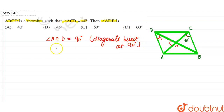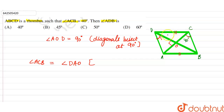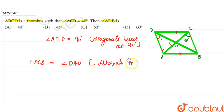Now, angle ACB is equal to angle DAO. The reason is that AB is parallel to CD, and AC is a transversal. Therefore, angle ACB equals angle DAO by the alternate interior angles property — alternate interior angles are equal.